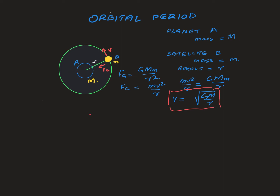Now we find the orbital period T. In circular motion, if the satellite takes time T to complete one orbit, it covers a distance of 2πr. So from this we can write the linear velocity as v = 2πr / T, where T is the time it takes for the satellite to complete one orbit. Using equation 1 and equation 2, we can derive a formula for the period T.